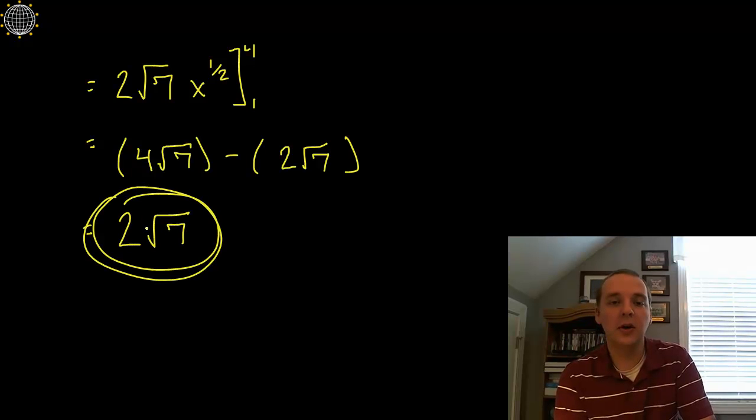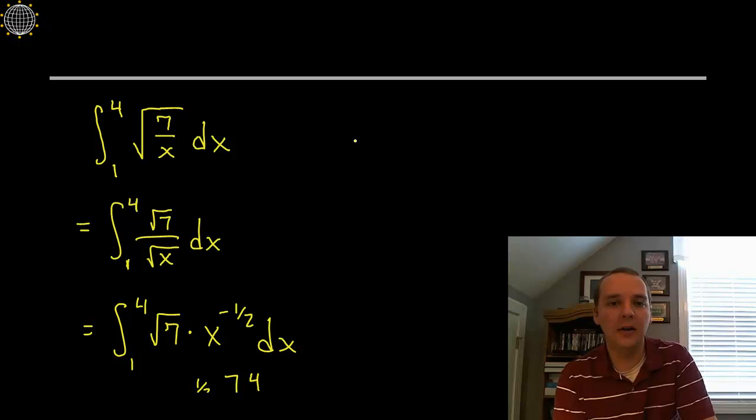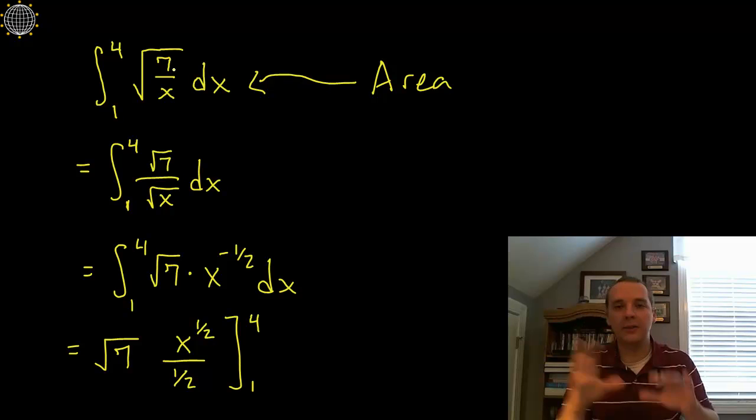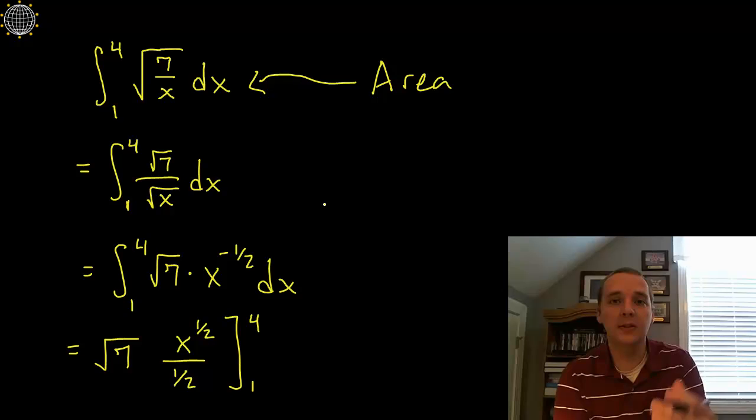So this will be our final answer. Now what does that answer represent? Well the same as every other definite integral. This is the area under this curve from one to four. So the thing I wanted to illustrate primarily in this example here is the importance of looking at an integrand and rewriting it some way using algebra so that it fits one of the small handful of integration rules that we do have.